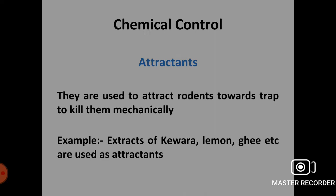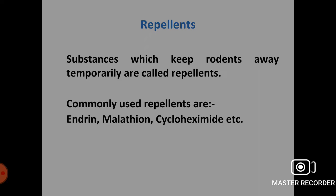Attractants are used to attract rodents towards a trap to kill them mechanically. Examples of attractants are extracts of kevda, lemon, ghee, etc. Repellants are substances which keep rodents away temporarily. The most commonly used repellants are endrin, malathion and cyclohexamide.